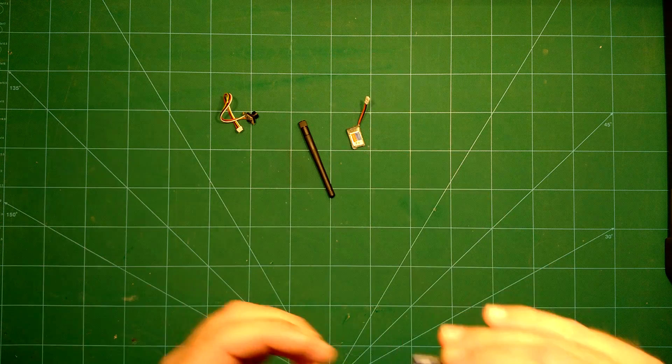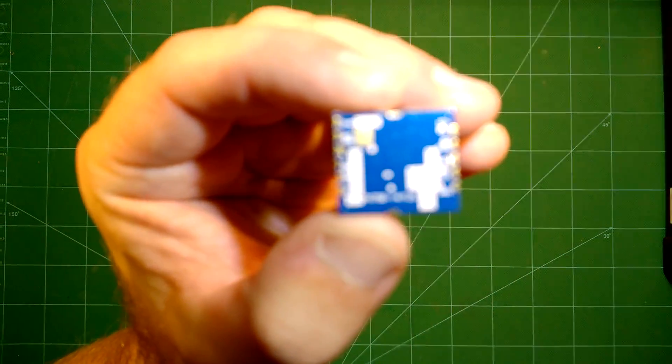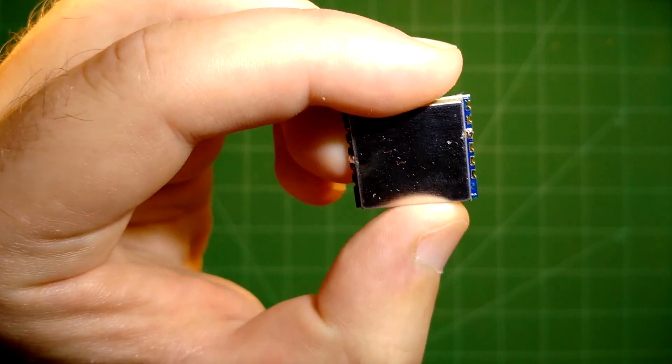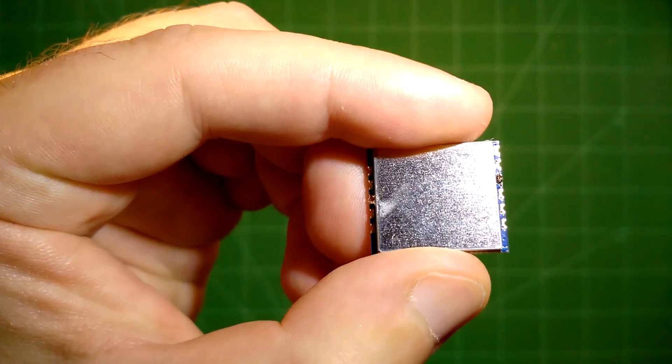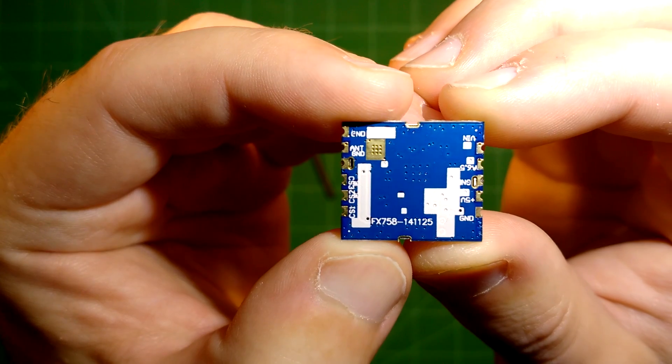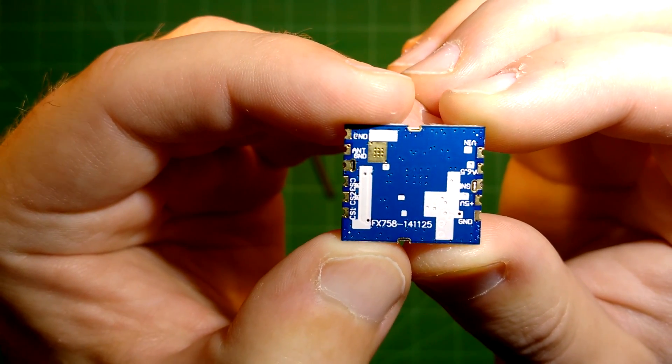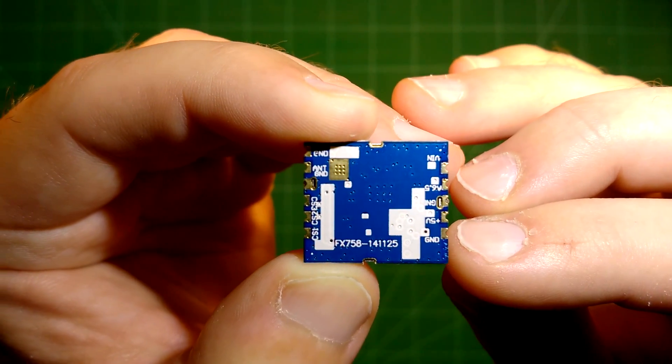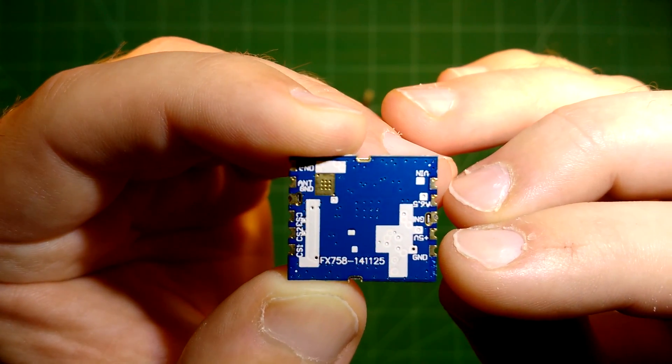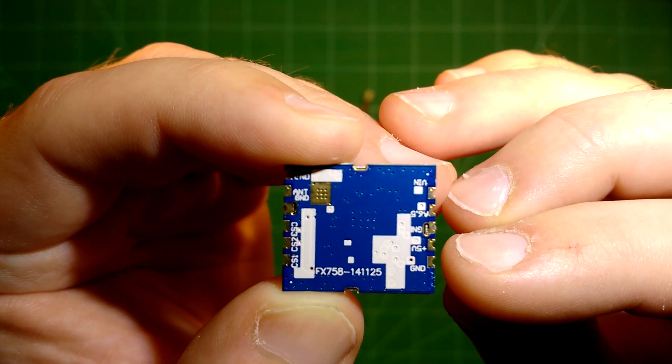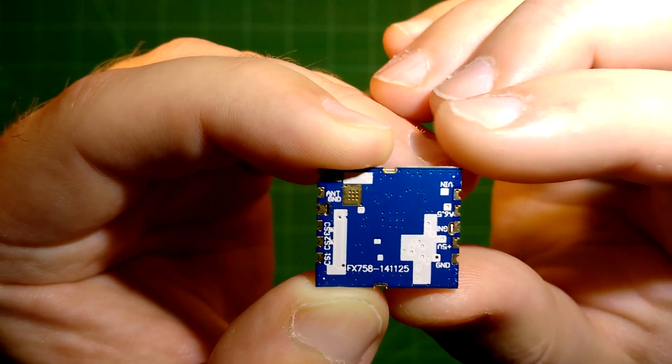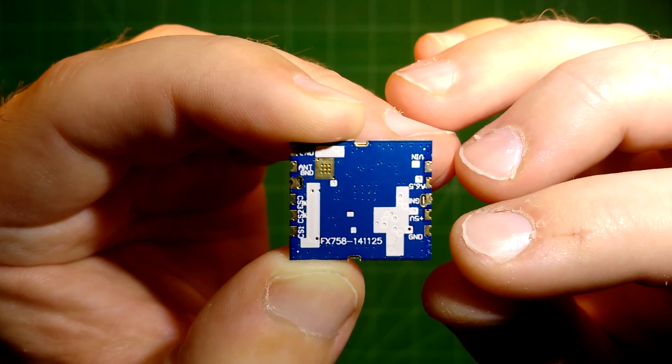First I got myself one of these 200 milliwatt transmitter modules. As you can see they are very nice. They also come with a heatsink here. They weigh about 2 grams and you have all the connectors which you need here. So here is the power supply, ground and 5 volts.